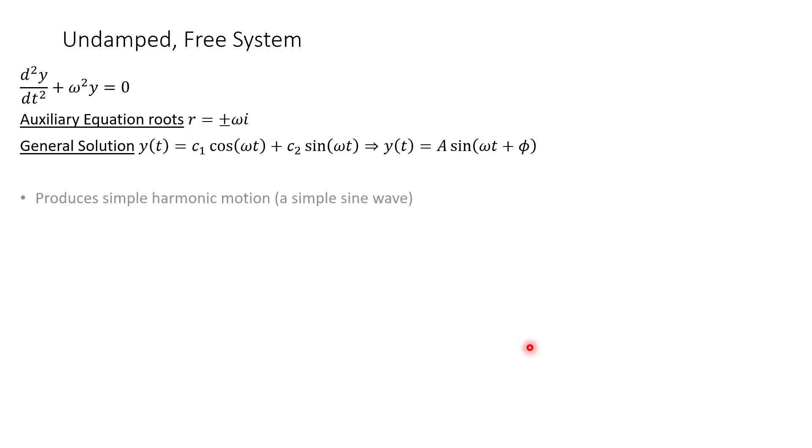Let's just mention a few things about this system. It produces simple harmonic motion, which is just a simple sine wave. A represents the amplitude. Phi represents a phase angle, think of it like a shift horizontally. And then our period is 2 pi over omega, and the period is the time that it takes for one cycle to occur. And then the reciprocal of that, if you flip over the period, we call that the frequency, and it's cycles per second.